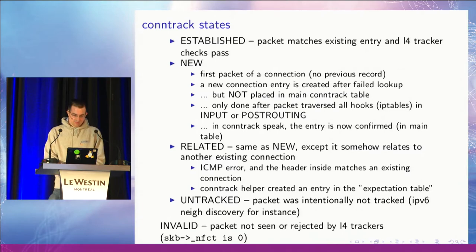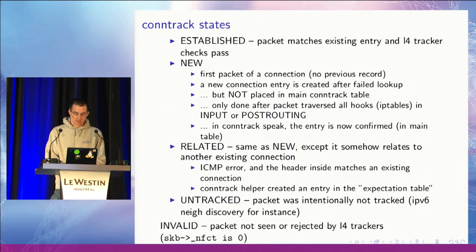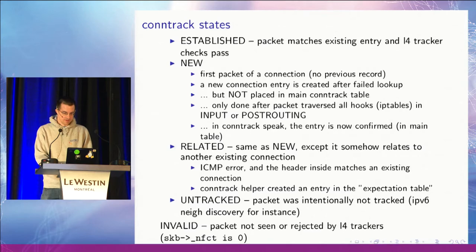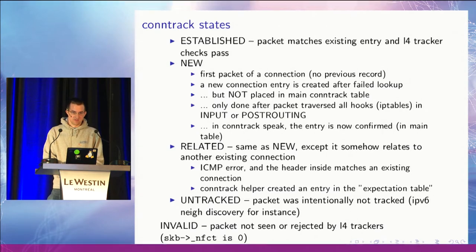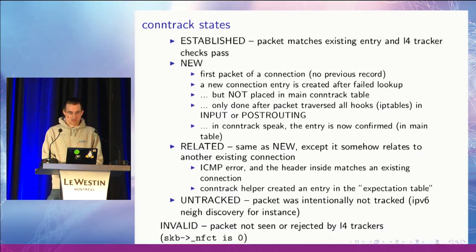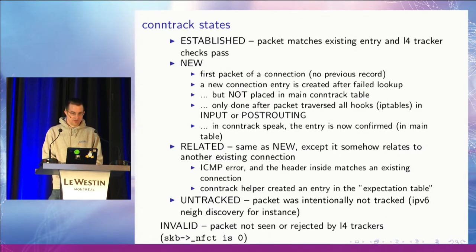Another state is 'new', which will happen when we have no previous record at all, and in that case we will try to allocate a new connection tracking entry. But we will not place it in the main table until after all the IP tables rules have been passed — that's basically an optimization, because adding to the table requires taking locks, and if you are being flooded and packets are being dropped there's no point in taking the extra penalty of adding and deleting from the conntrack table. In conntrack terms, an entry is always 'confirmed' as soon as it enters the main table.